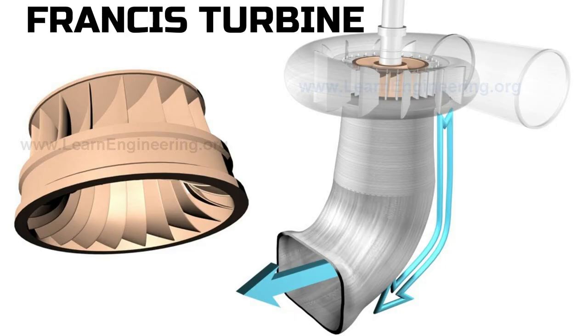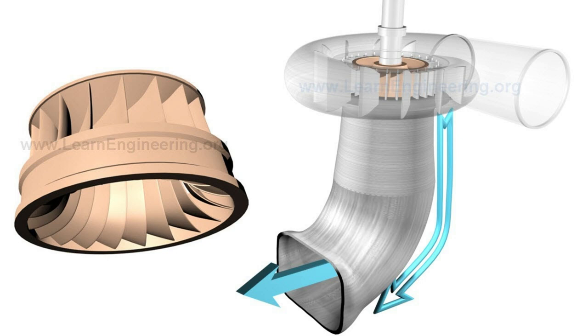The most commonly used radial flow turbine for high power generation is Francis turbine. But it is not a fully radial type turbine. It is actually a mixed flow turbine as the fluid enters radially and leaves axially.